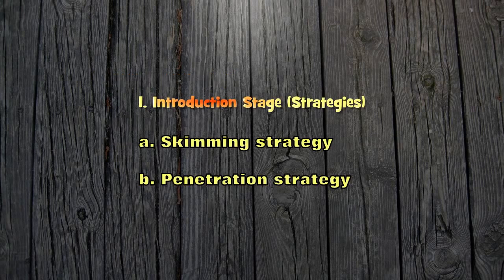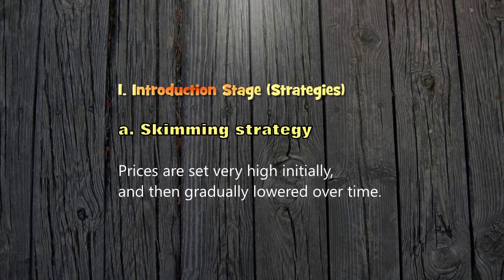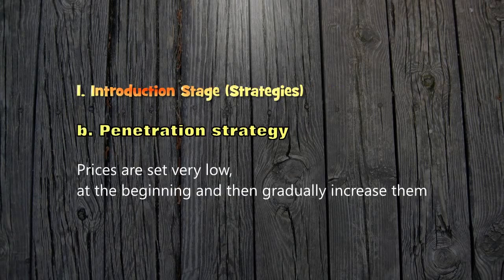There are two different strategies you can use to introduce your product to consumers: a skimming strategy or a penetration strategy. If a skimming strategy is used, prices are set very high initially and then gradually lowered over time. This is a good strategy if there are few competitors, as profits are high, but there is also great risk — if people don't want to pay high prices, you may lose out. The penetration strategy sets prices very low at the beginning and then gradually increases them. This works well when there are many competitors who control a large portion of the market, with the priority being to get your product known rather than immediate profit.